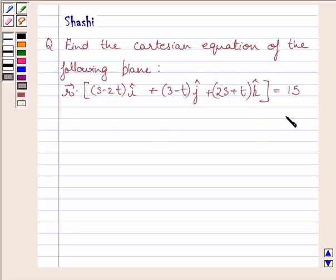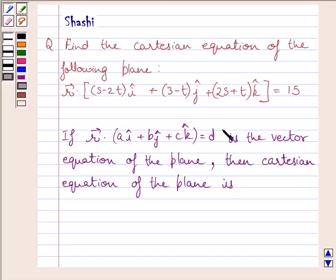This is the given equation of the plane. First of all, let us understand that if this is the vector equation of the plane given to us, then Cartesian equation of the plane is Ax plus By plus Cz is equal to D.